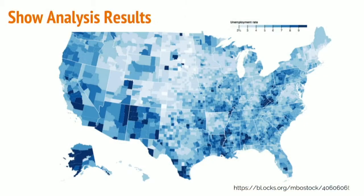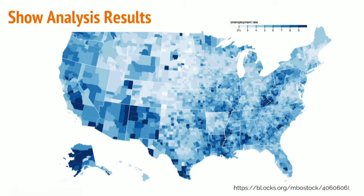Another reason you might want to map is to show analysis results. This is called a choropleth map — has anyone heard that word before? A choropleth map is basically where you've done some sort of analysis. In this case it's unemployment rates across the U.S. by county, and you're putting things into buckets. So this one is unemployment rate by percentage — if it's above 9%, it's in the same color bucket. There are lots of ways to make those buckets. This one is made by Mike Bostock, who's the creator of D3, so this is actually a D3 map, which is pretty cool.